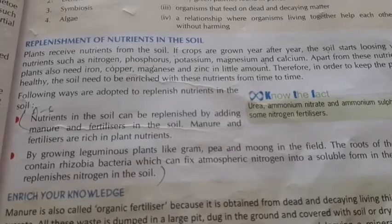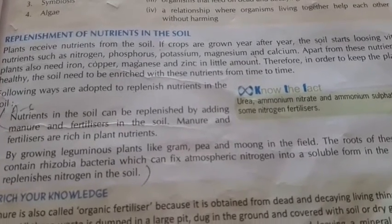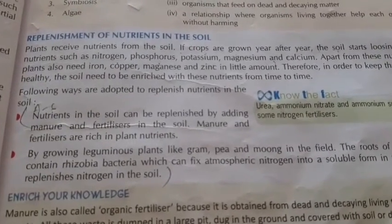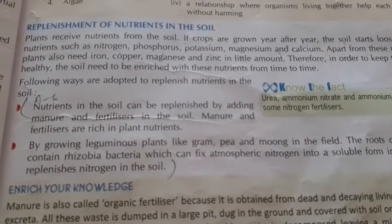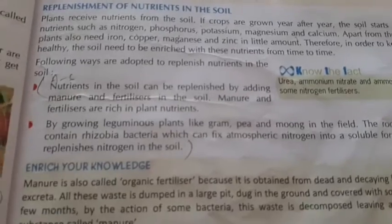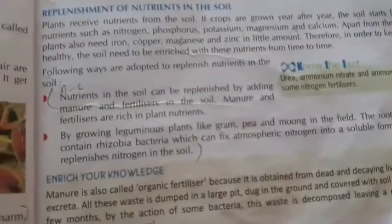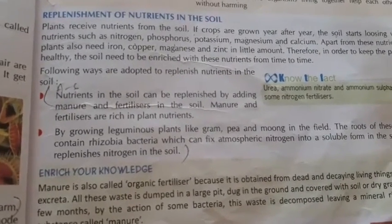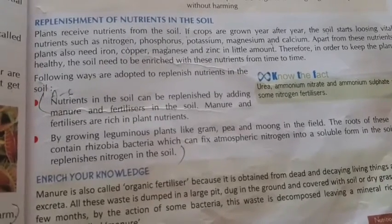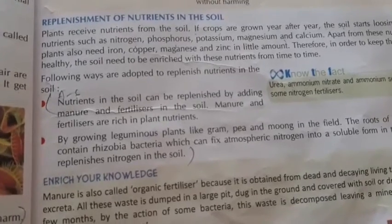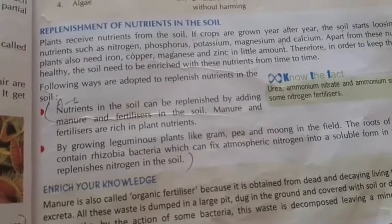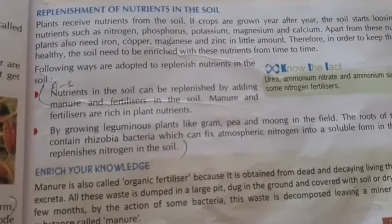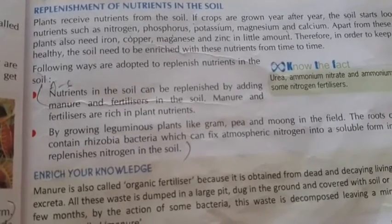Apart from these nutrients, plants also need iron, copper, magnesium, and zinc. This is why plants need healthy nutrition. Nutrition in the soil can be replenished by adding manure — if the plant needs to be healthy, we can refill it again and also add fertilizers.